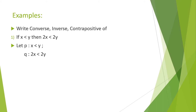Now if the given conditional statement is P implies Q, then its converse is Q implies P — we have to interchange P and Q. So interchanging P and Q, the converse is: if Q then P, meaning if 2x is less than 2y, then x is less than y.